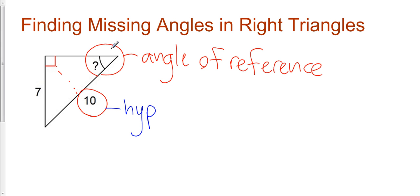With respect to my angle of reference, I have the side opposite the angle in question. So opposite the hypotenuse, I have the sine ratio which refers to the opposite over the hypotenuse. The sine of theta would be equal to the opposite over the hypotenuse.